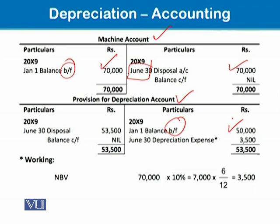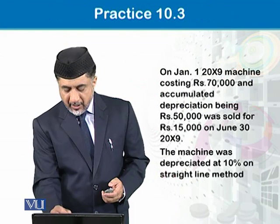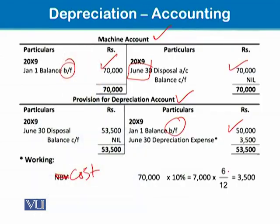The challenge is to work out depreciation for this 6-month period, which is calculated on cost using the straight line method. Cost is $70,000 at 10% gives $7,000 per year, and for 6 months that is $3,500. So this $3,500 is entered here, and the total accumulated depreciation up to the date of disposal is $53,500.